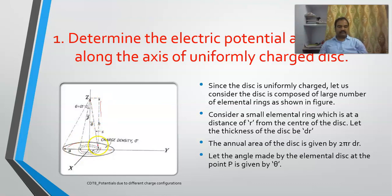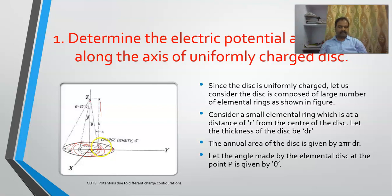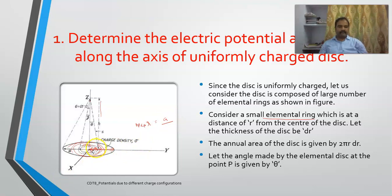Since the disc is uniformly charged, I will assume that the disc is composed of different elemental rings. Consider a small elemental ring at a distance r from the center, with thickness dr. The area of this elemental ring is approximately the circumference times the thickness, which is 2πr dr.